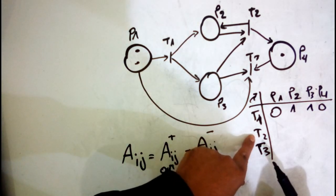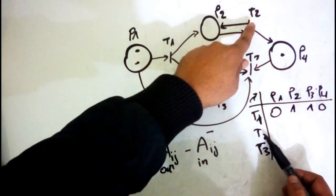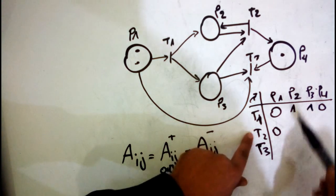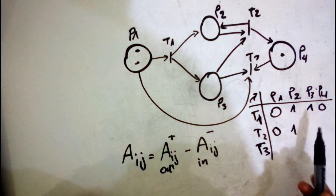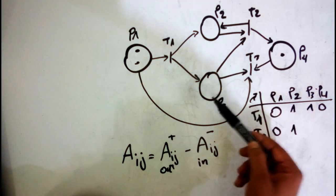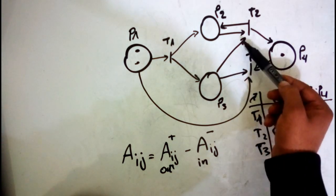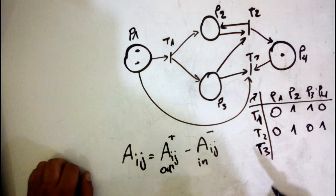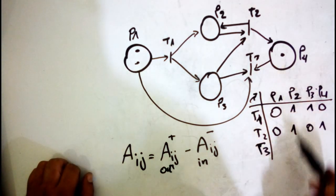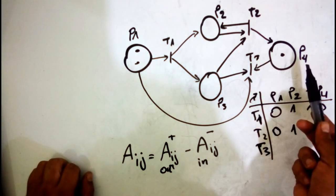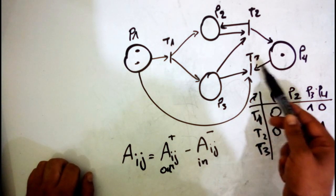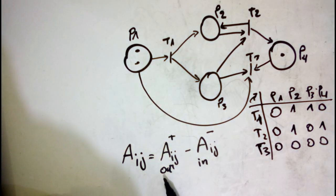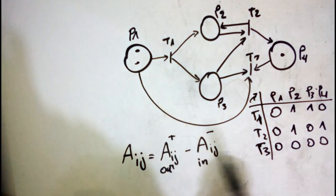For t2: t2 to p1 there is no output so that is 0. t2 to p2 there is no output — this is just an input arc — so that is 0. t2 to p4 is 1. For t3, this transition has no output arcs at all, so all entries are 0 0 0 0.